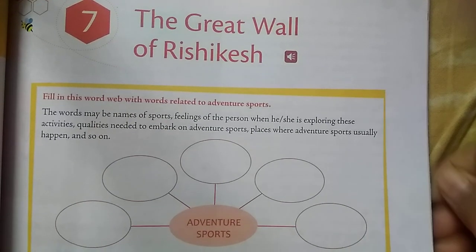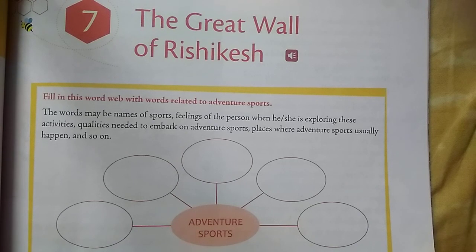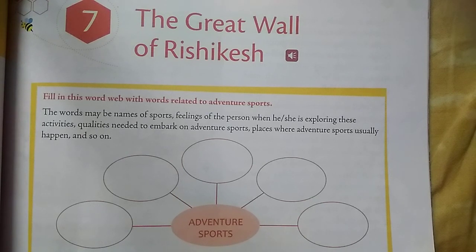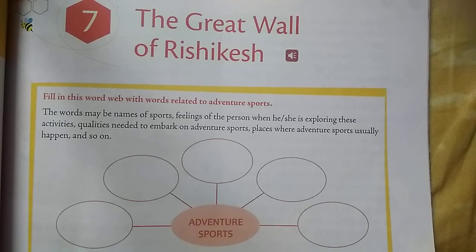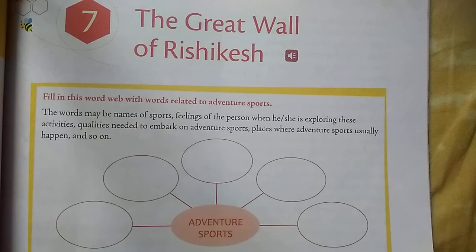Moving to our lesson — The Great Wall of Rishikesh. Here, 'wall' does not mean a wall of concrete, but rather an obstacle — the obstacle at Rishikesh. There is also a word web activity: fill in words related to adventure sports, such as names of sports, feelings of the person exploring these activities, qualities needed to embark on adventure sports, and places where adventure sports usually happen.